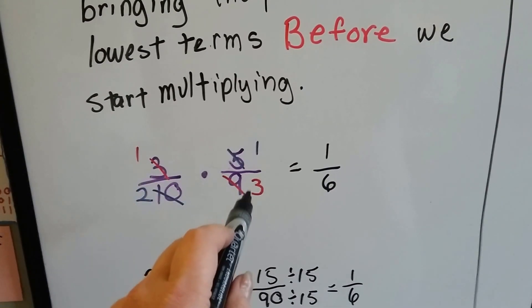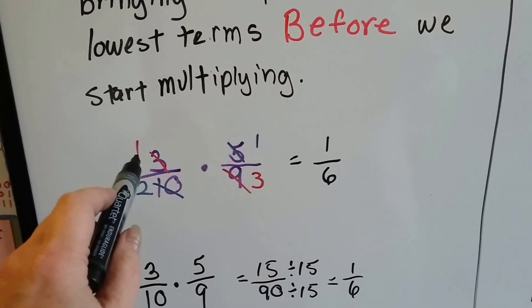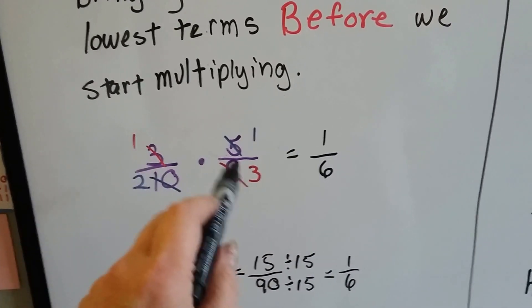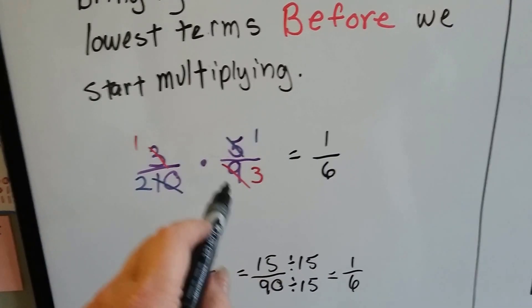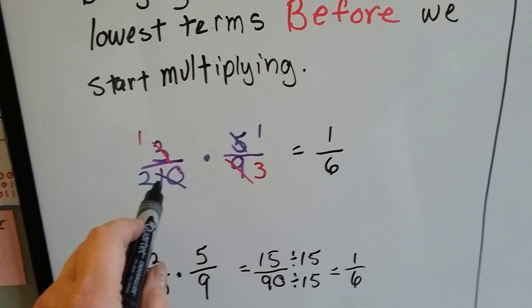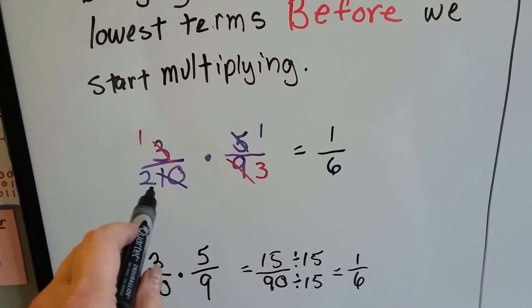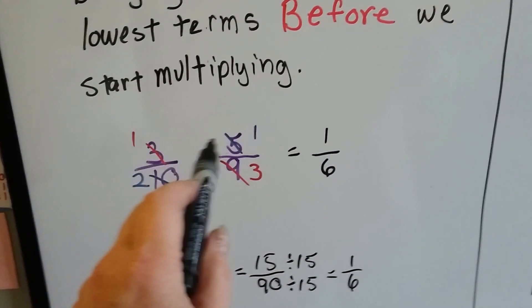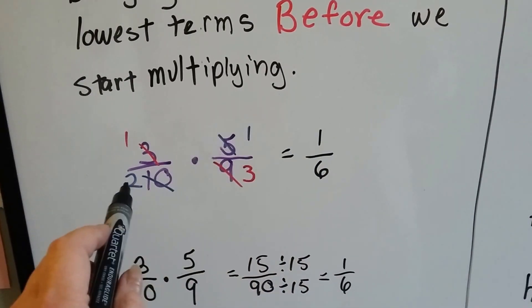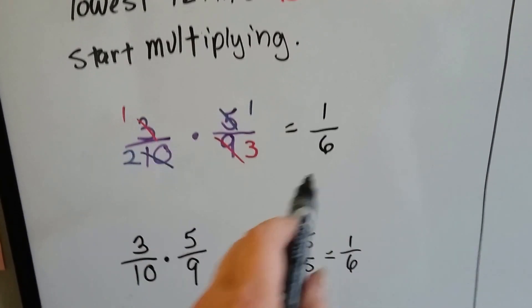There's one 3 in a 3 and there's three 3s in a 9, so we cross out the 3 and it becomes a 1, we cross out the 9 and it becomes a 3. There's one 5 in a 5 and there's two 5s in a 10, that becomes a 1, that becomes a 2. We just multiply across now and 1 times 1 is 1 and 2 times 3 is 6.